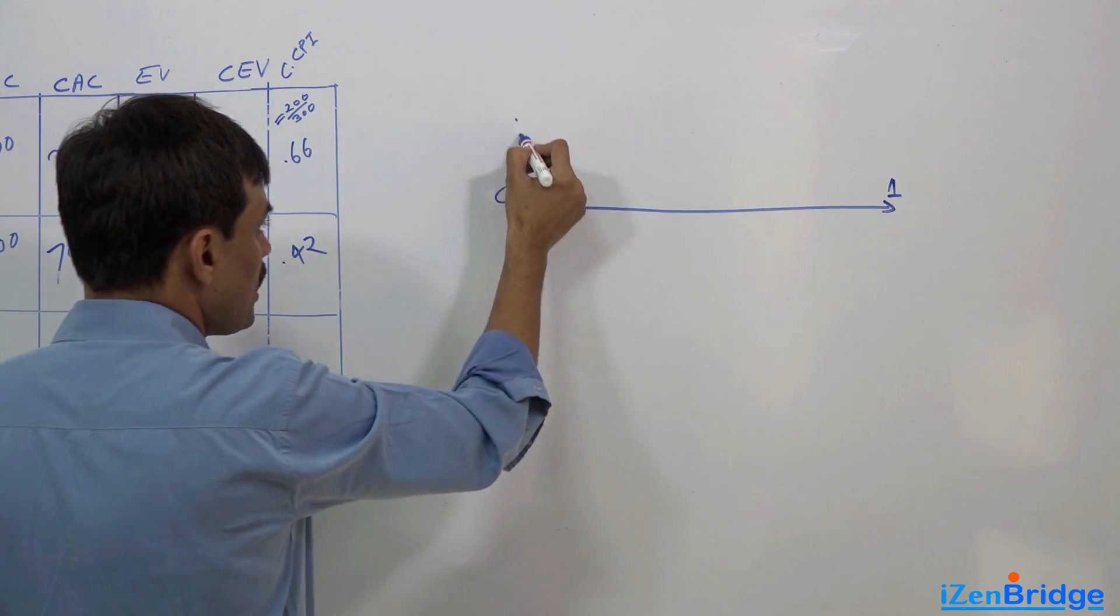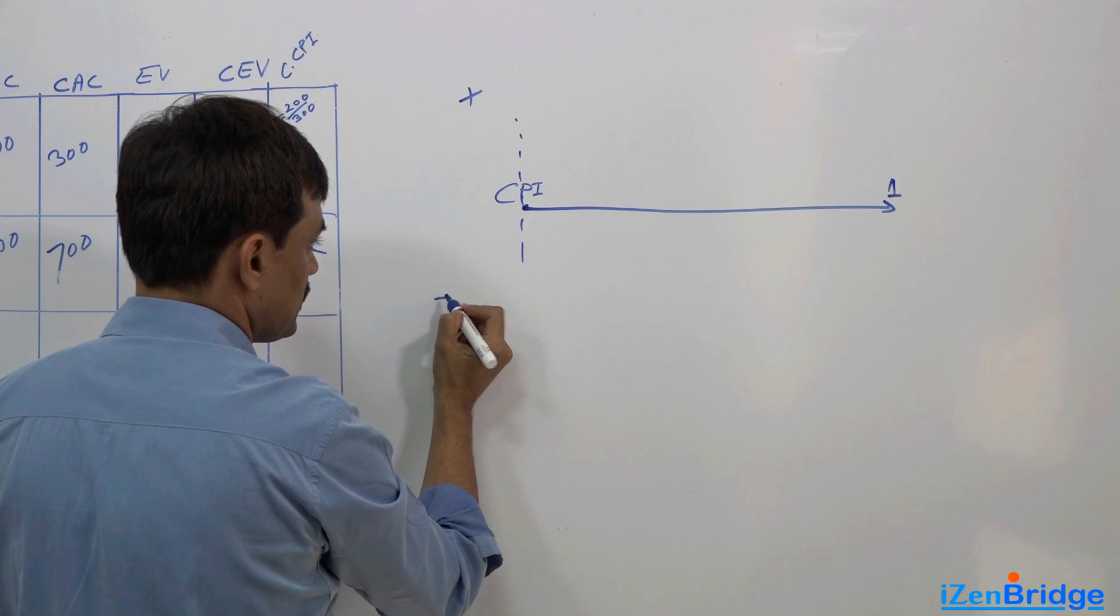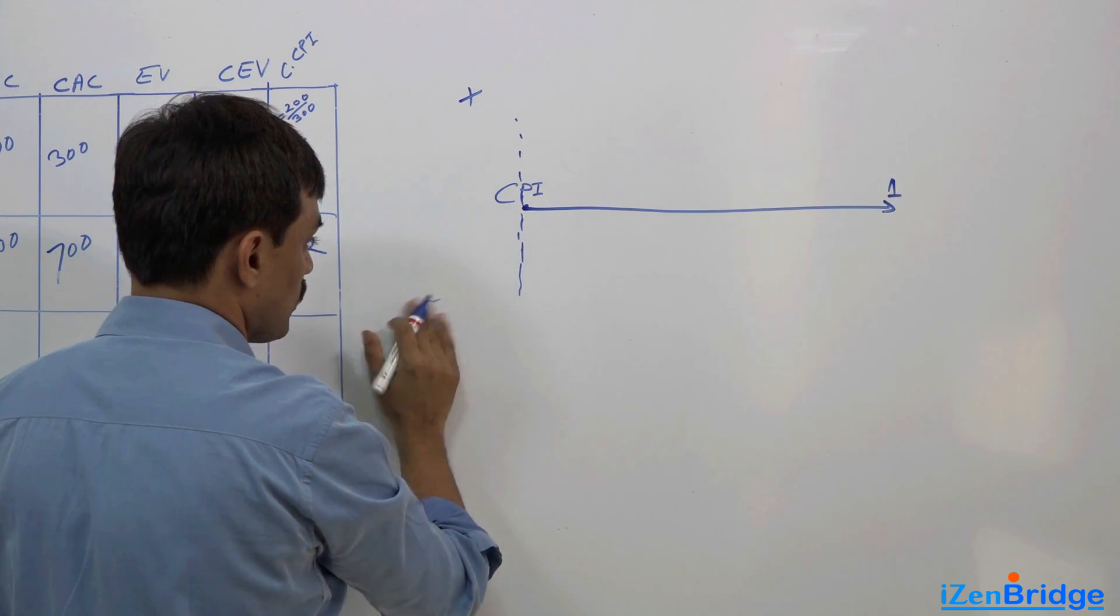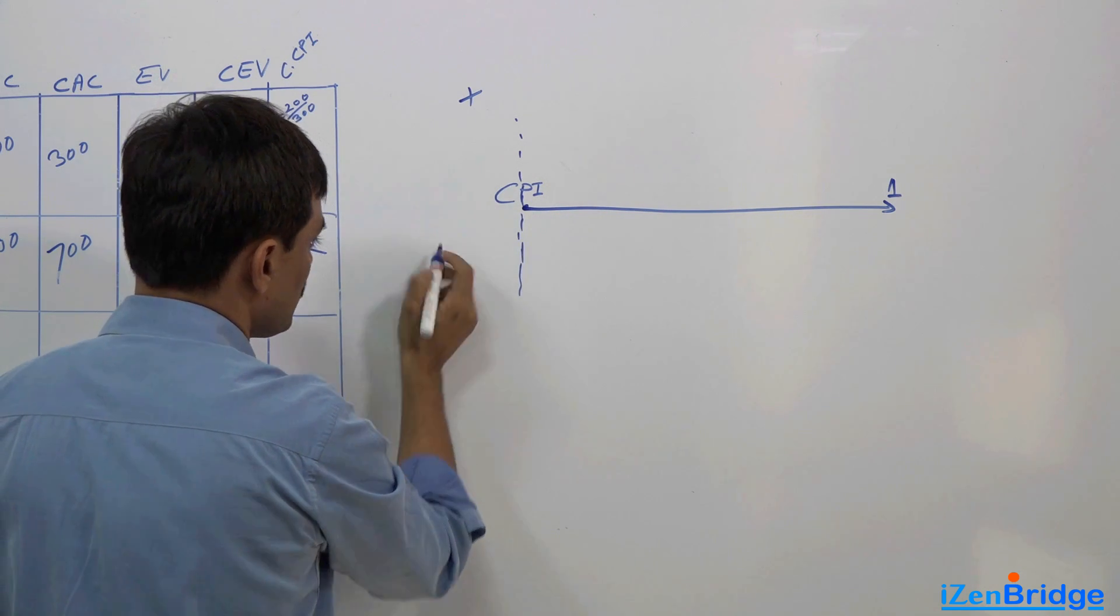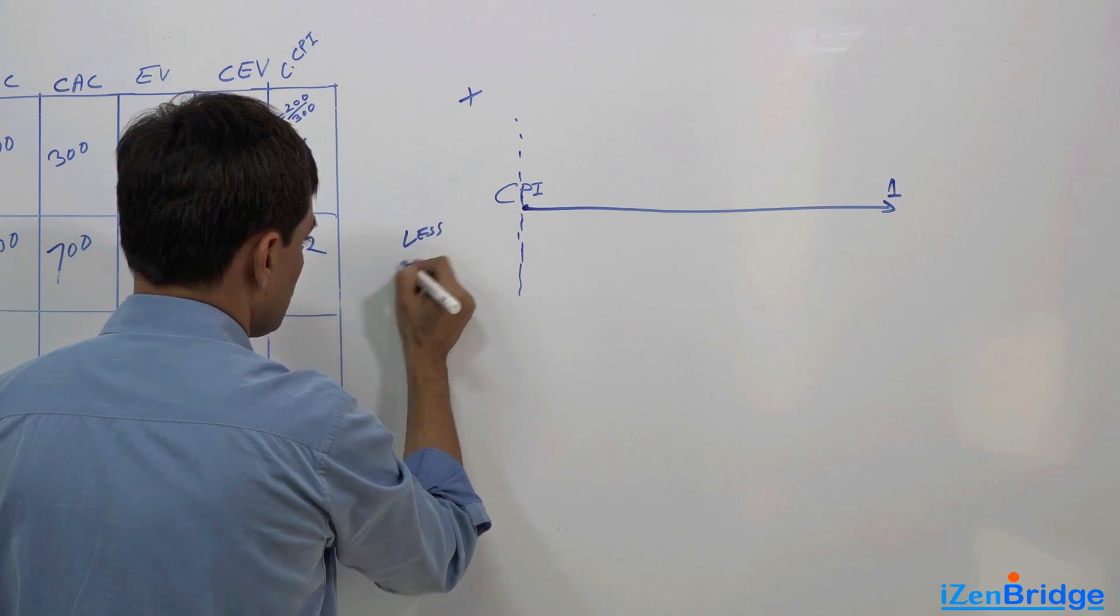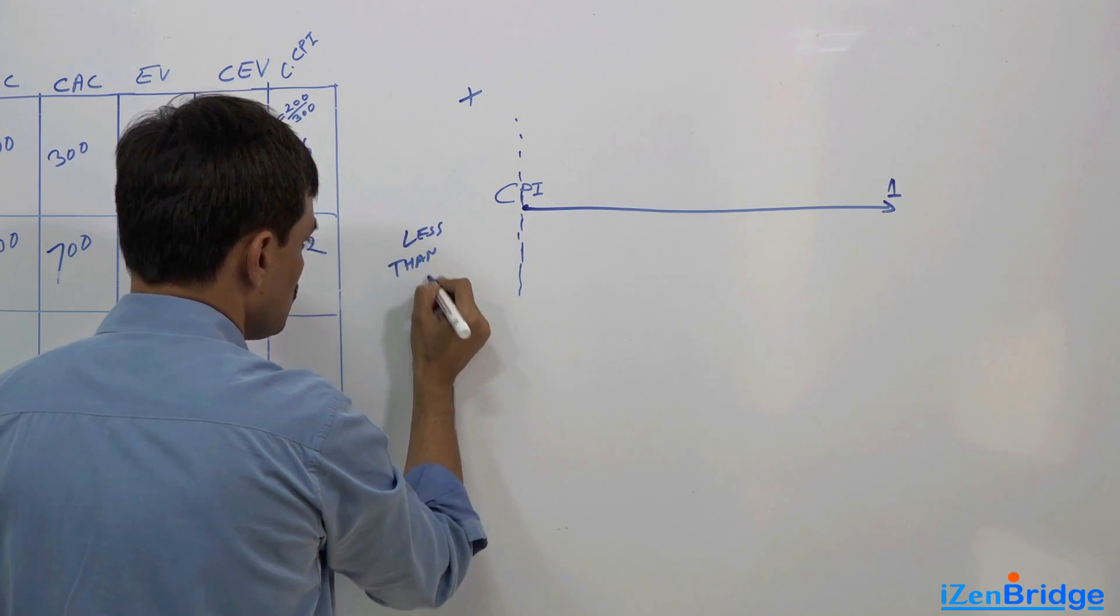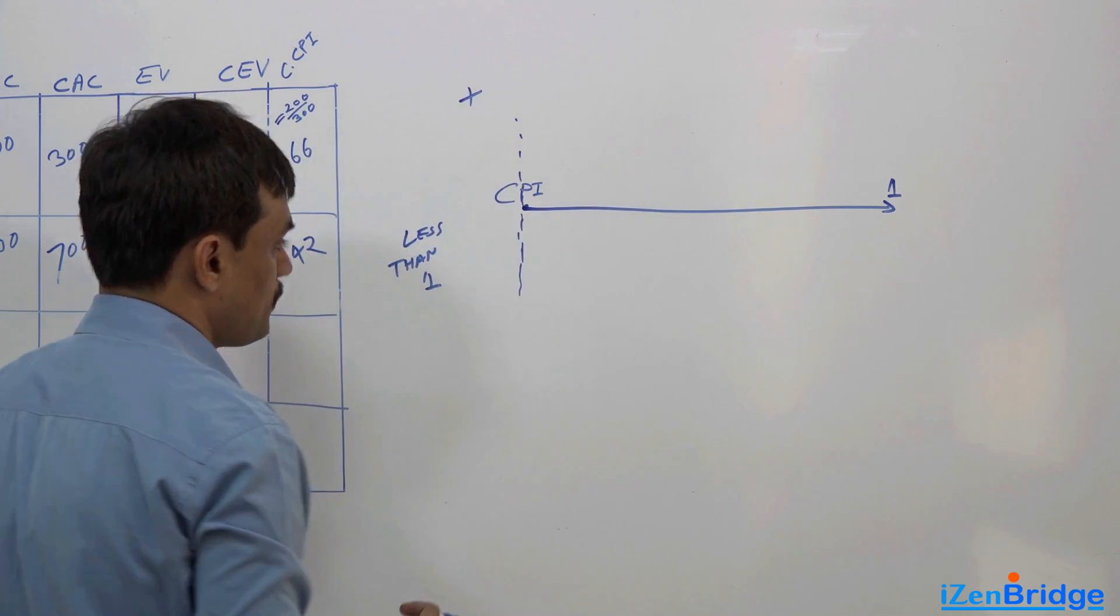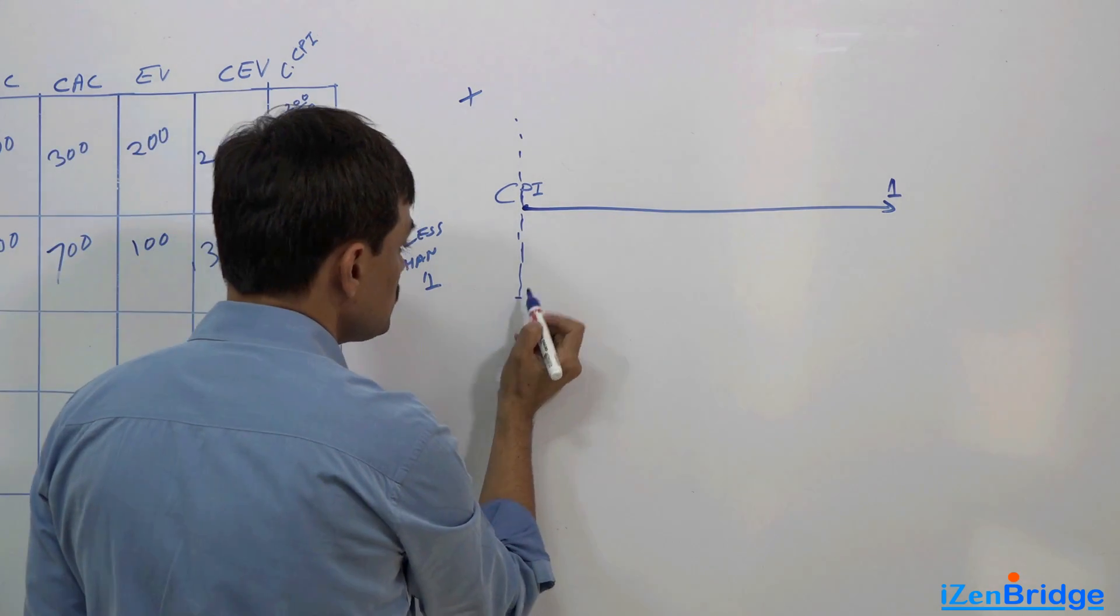Here you have a positive direction, here you have a negative direction, so less than 1. If it is less than 1, you go down. If it is more than 1, you go up.